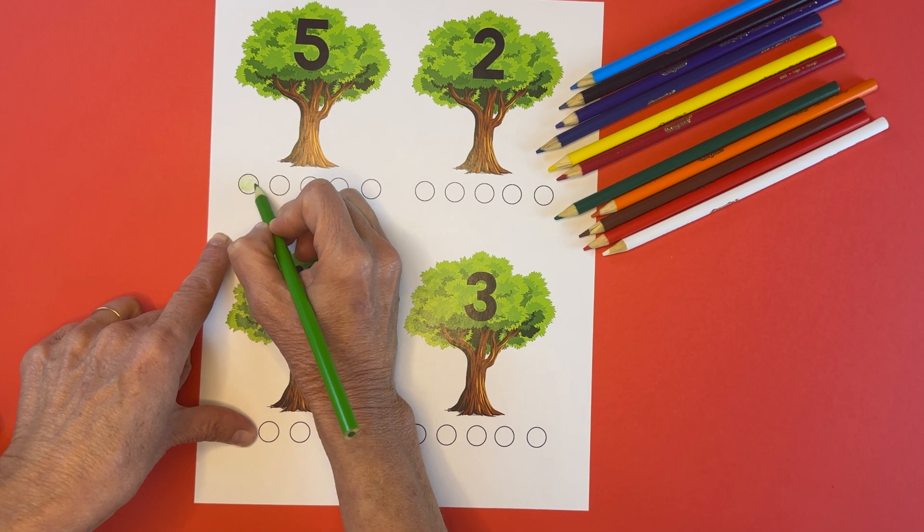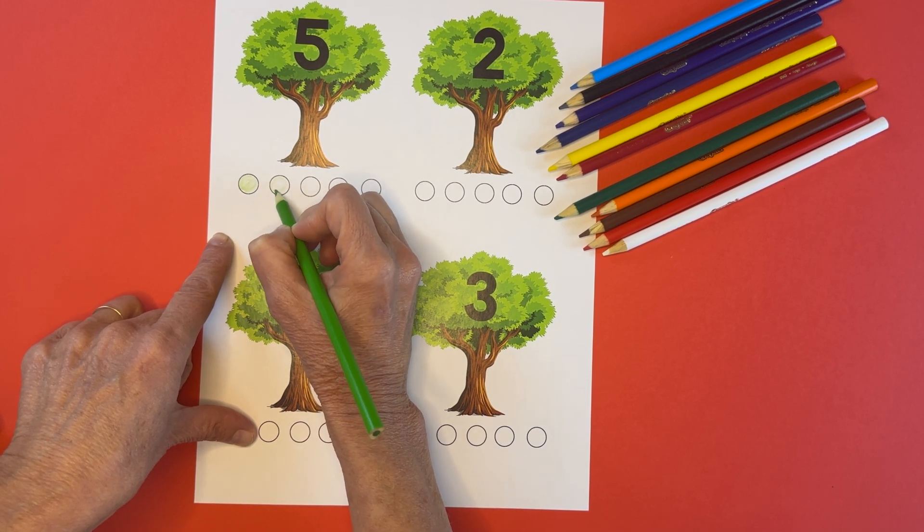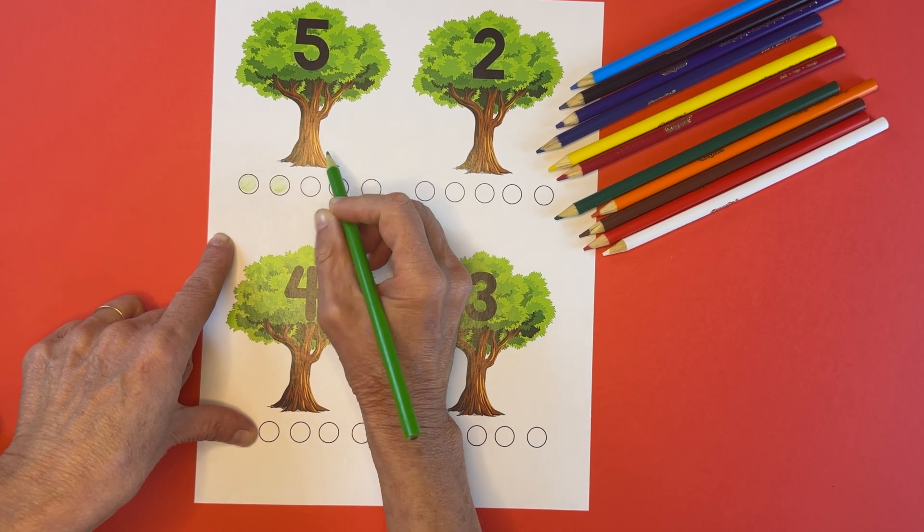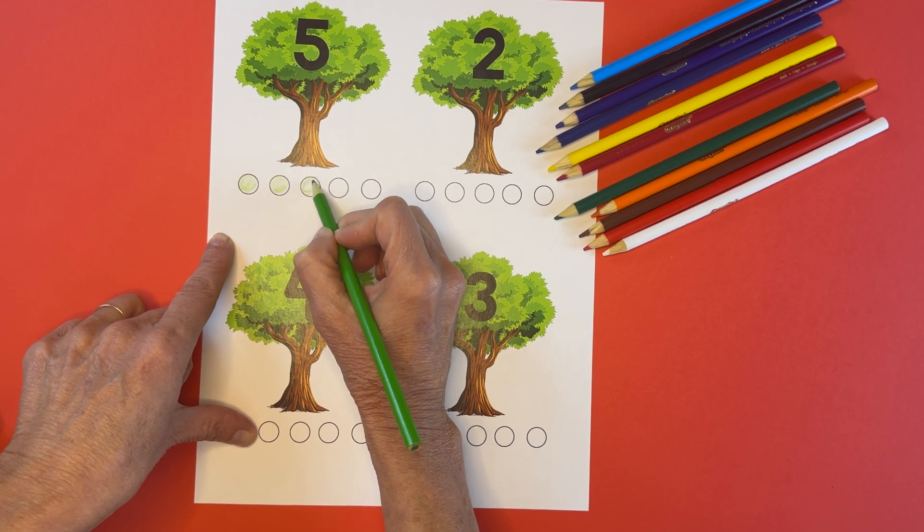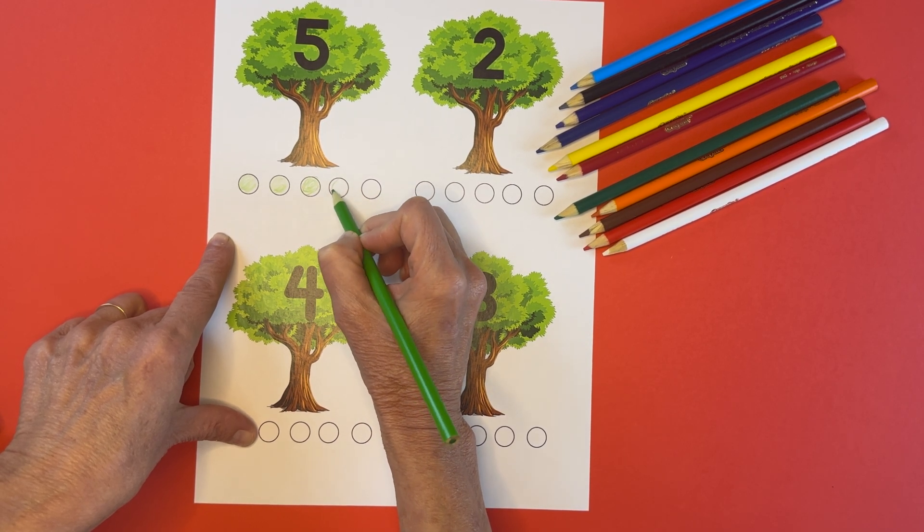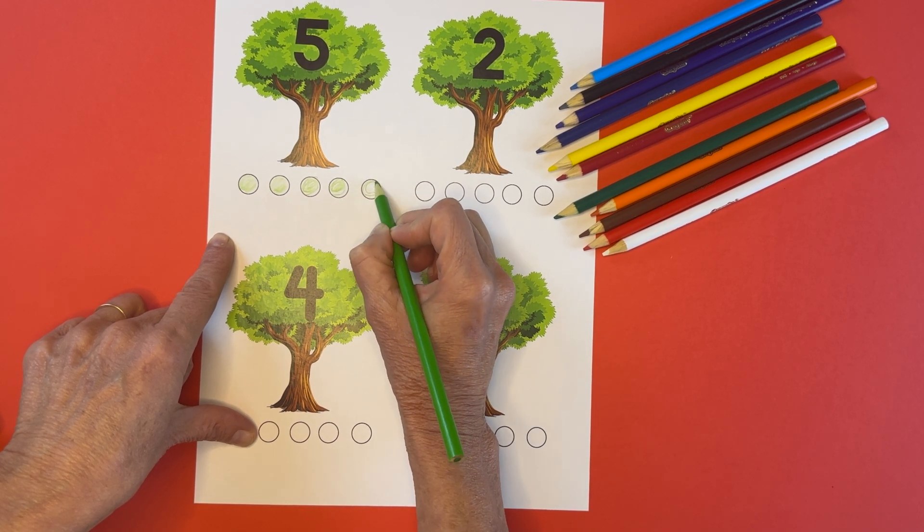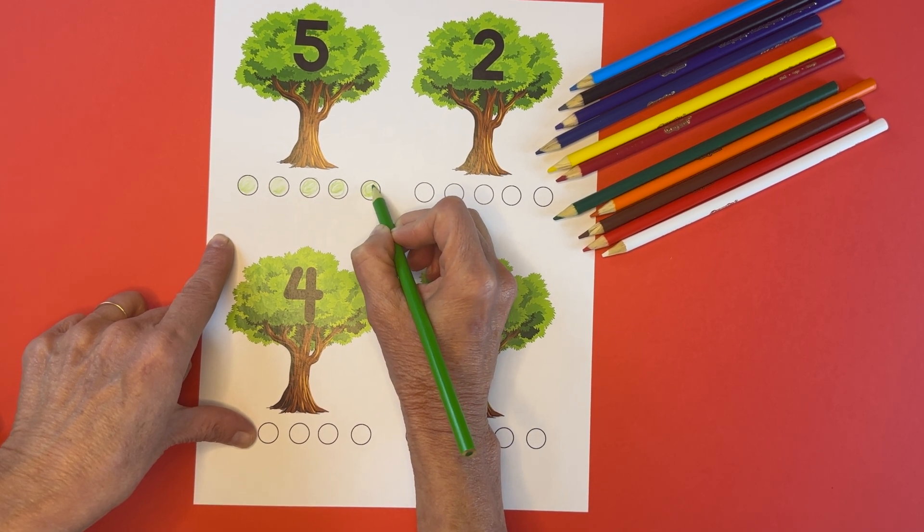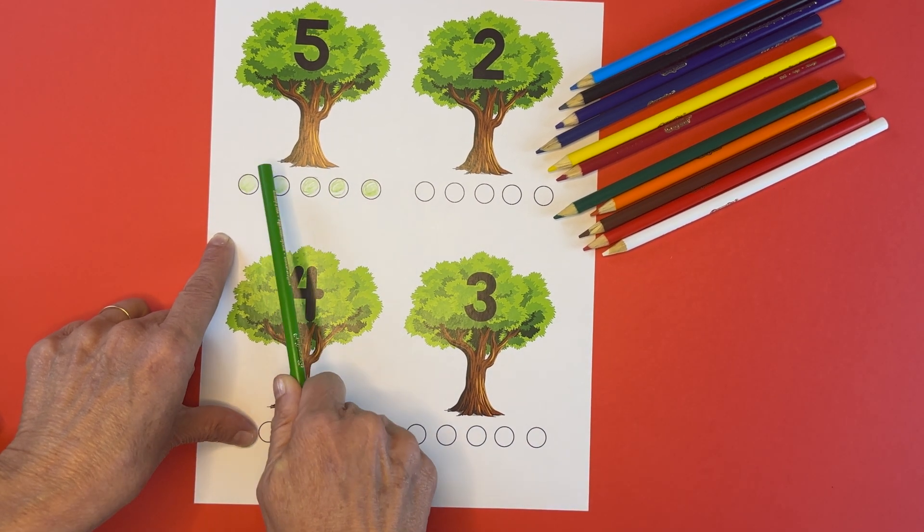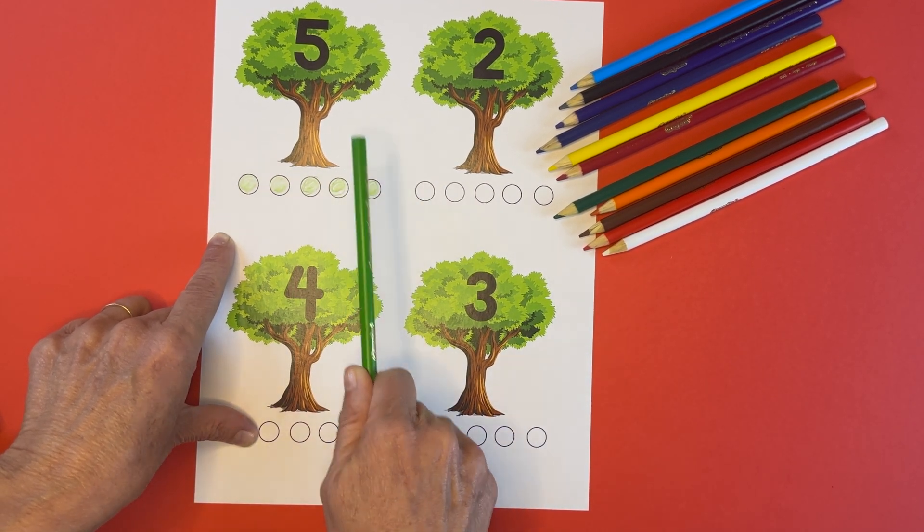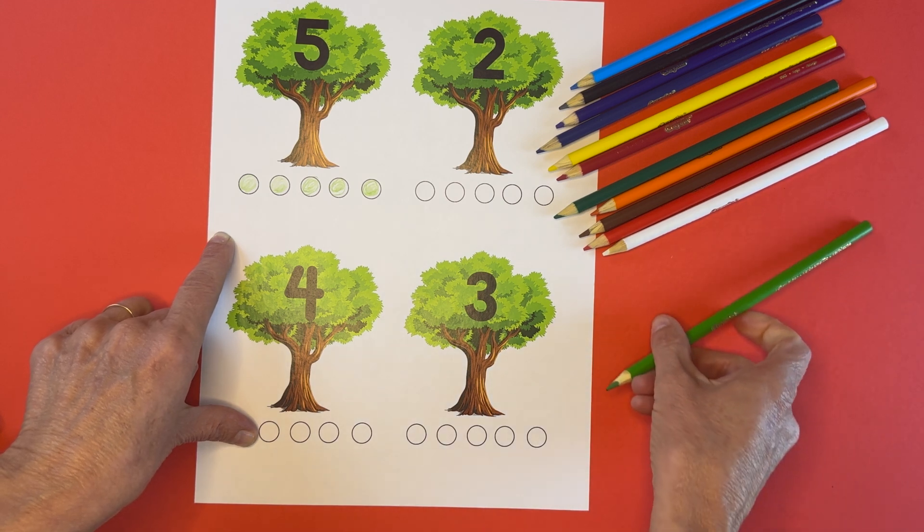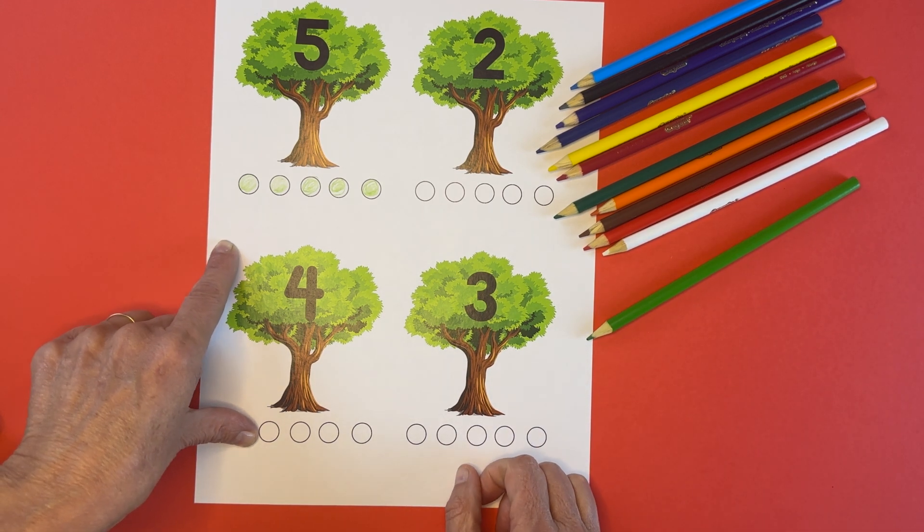One, two, three, four, and five. Okay. Awesome. One, two, three, four, five green apples under the number five apple tree.